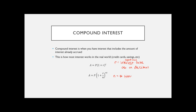The second equation takes into account how often you're getting interest, so N is the number of times a year you get interest. If you get it 12 times a year then N is 12. It's a slight variation on the formula, and if it's once a year then N equals one, and that's where we get back to that first equation.